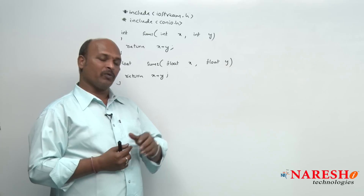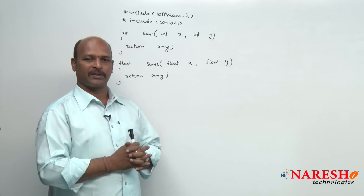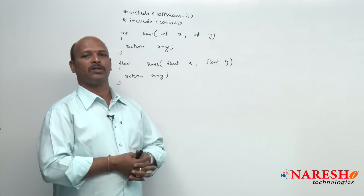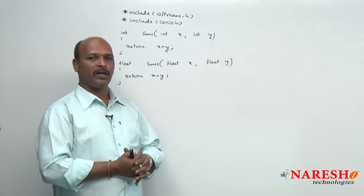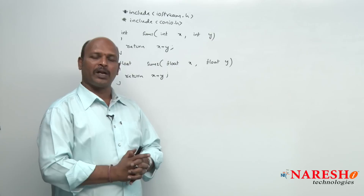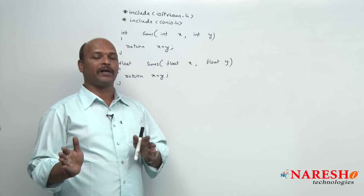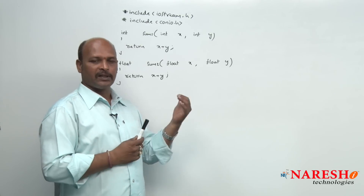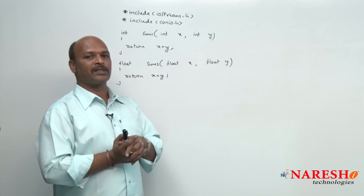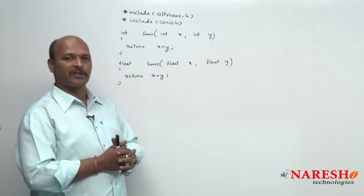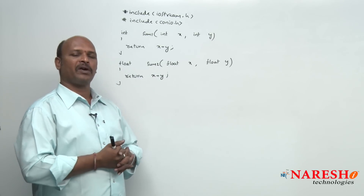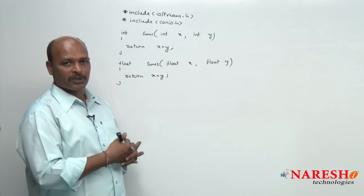One more important thing: we can declare functions using templates as well as classes using templates. That is why templates are divided into two types: one is function template and the second is class template, also called generic functions and generic classes. They are called generic because one shop handles different products — similarly, one function handles different tasks like integer, float, and so on. This also reduces the program size.